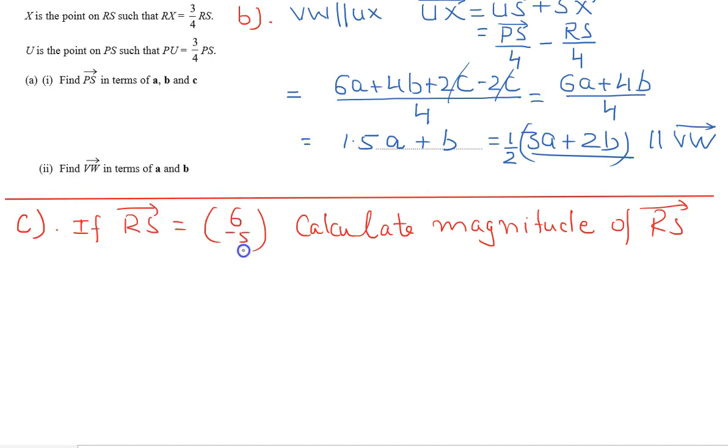Part 3: If RS is 6i minus 5j, calculate the magnitude of RS. The magnitude will be root of 6 square plus negative 5 square, that is 36 plus 25, which equals root 61. So the magnitude of RS is root 61.